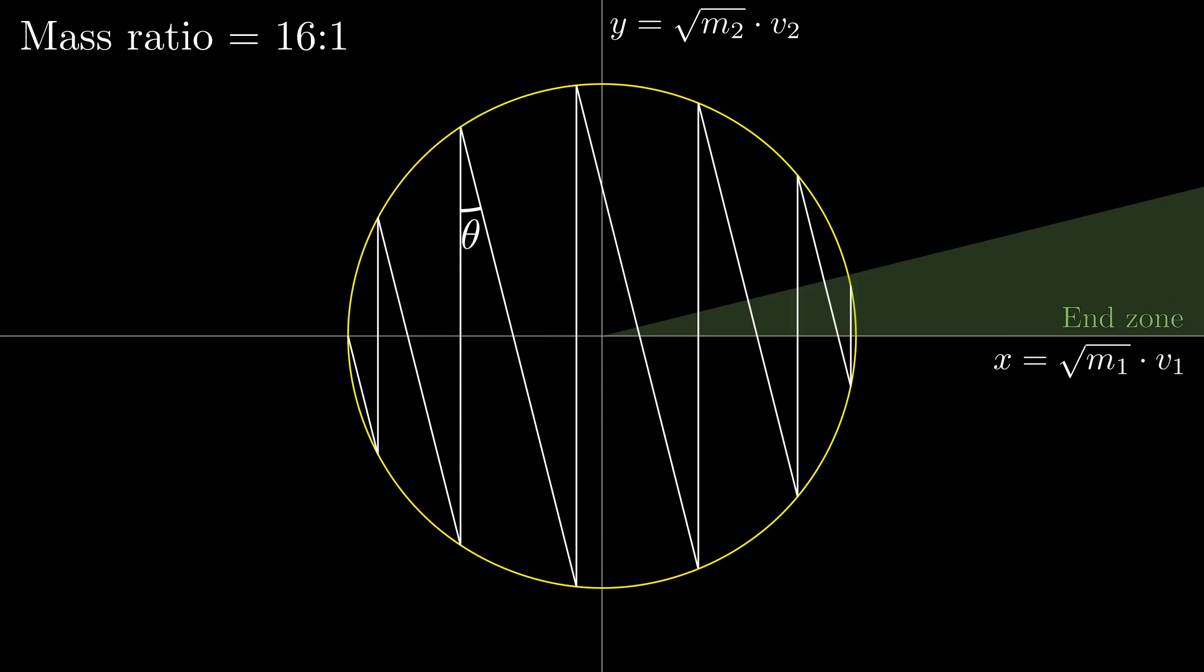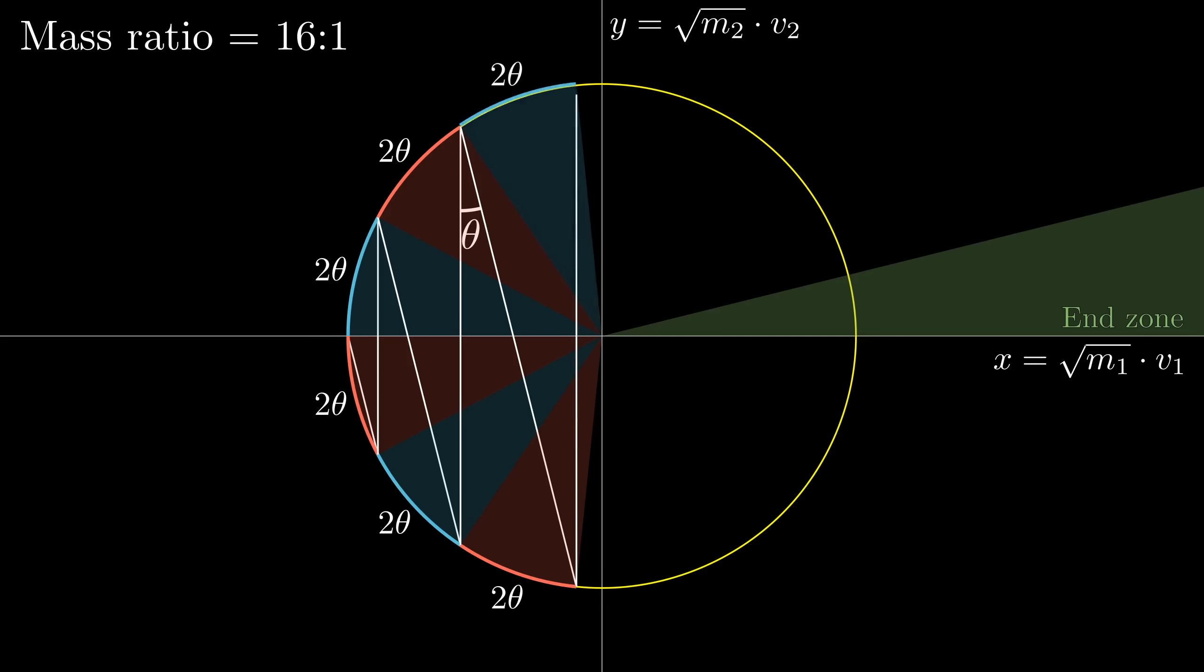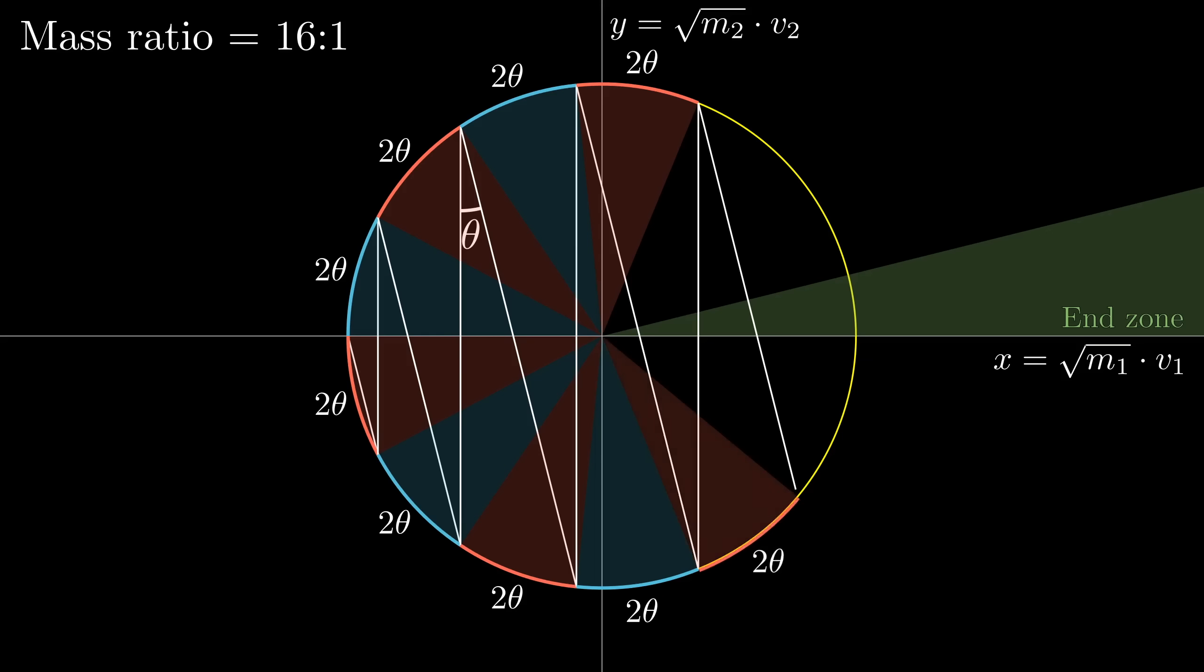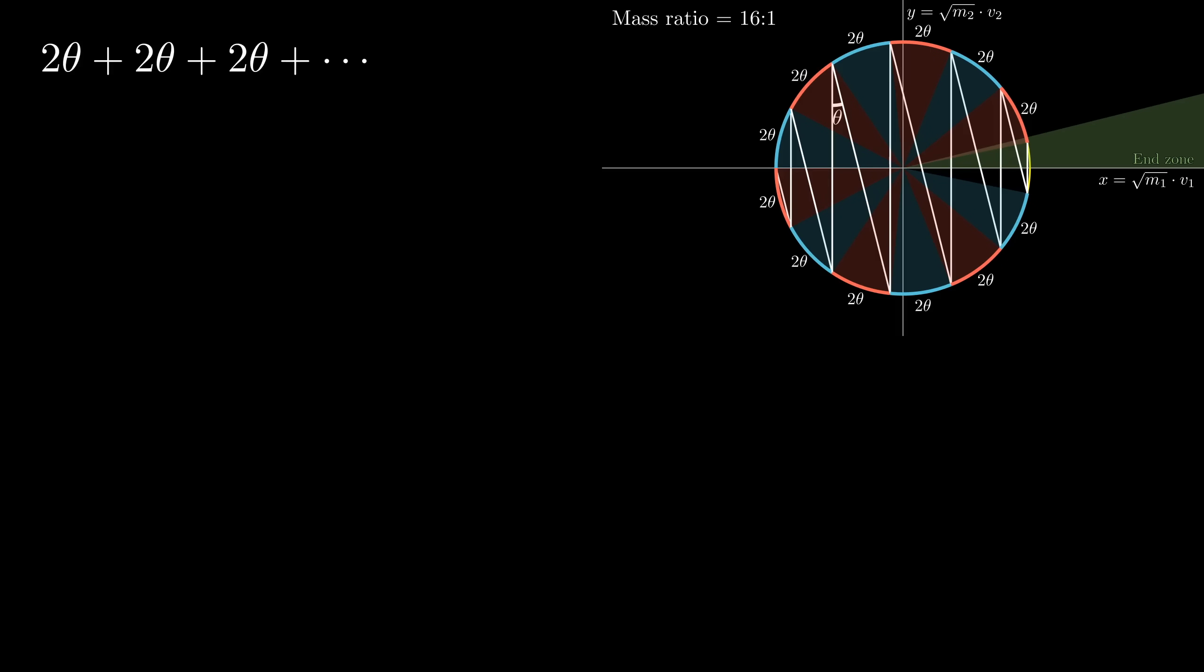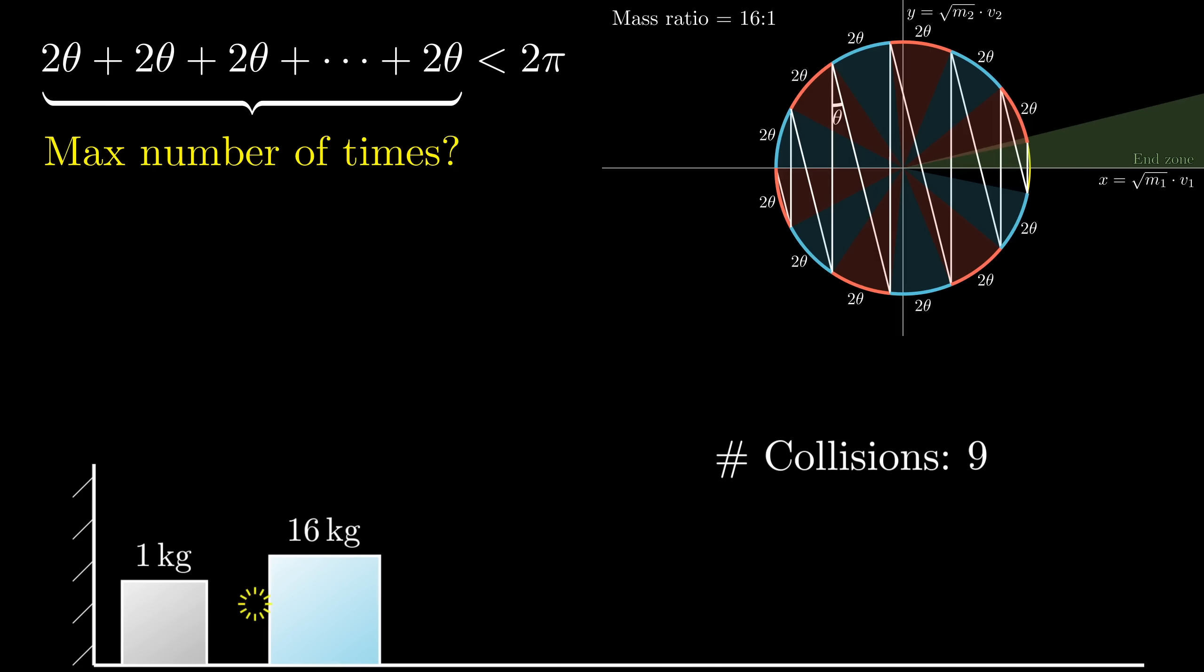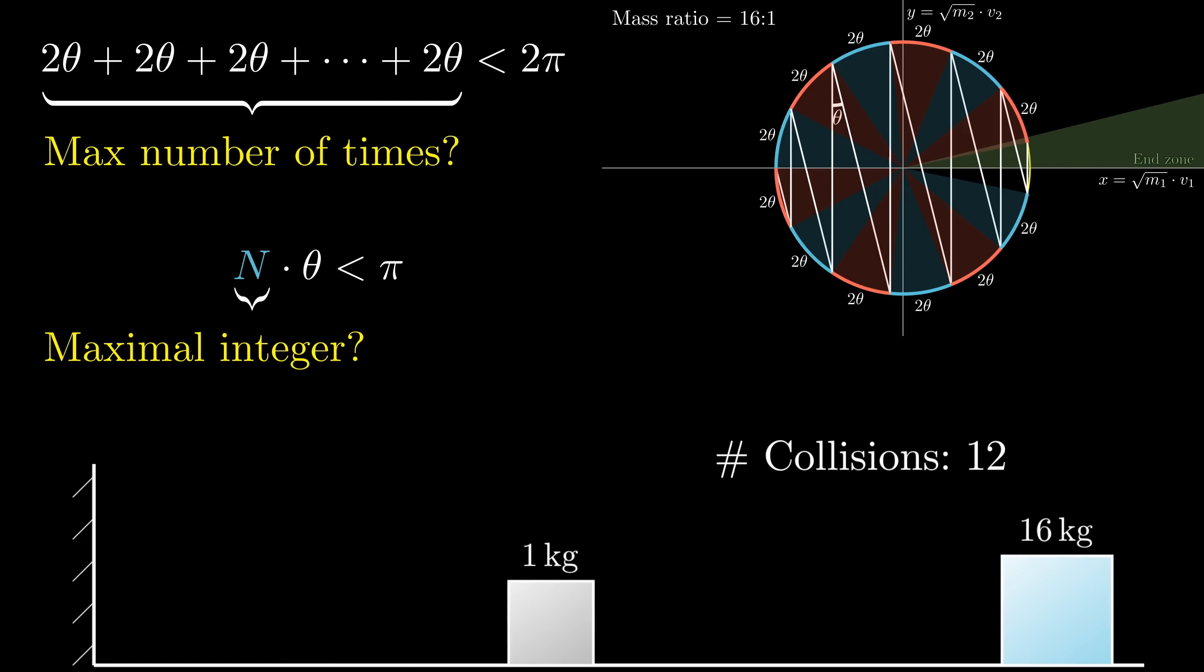So for each hop, if we drop down a new arc, like so, then after each collision, we cover another 2 theta radians of the circle. We stop once we're in that end zone on the right, which, remember, corresponds to both blocks moving to the right with the smaller one going slower. But you can also think of this as stopping at the point when adding one more arc of 2 theta would overlap with the previous one. In other words, how many times do you have to add 2 theta to itself before it covers more than the whole circle, more than 2 pi radians? The answer to this will be the same as the number of collisions between our blocks. Or, to say the same thing more compactly, what's the largest integer multiple of theta that doesn't surpass pi?